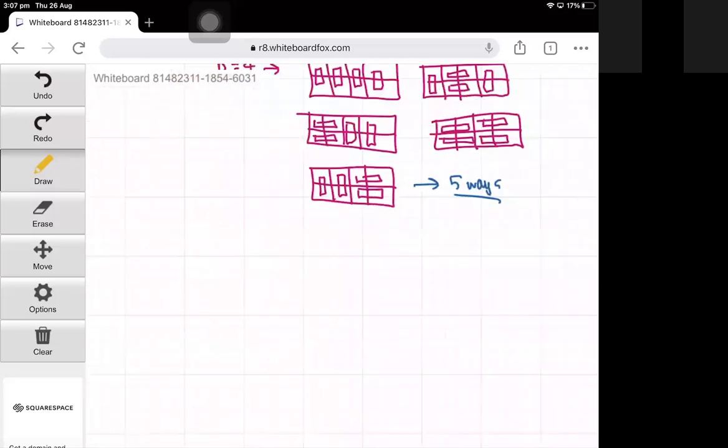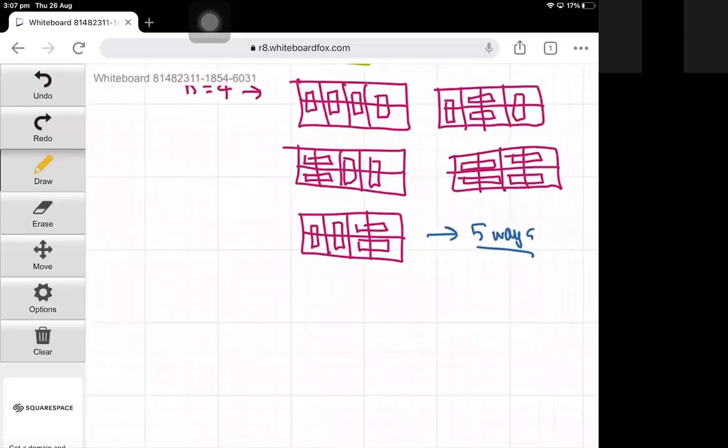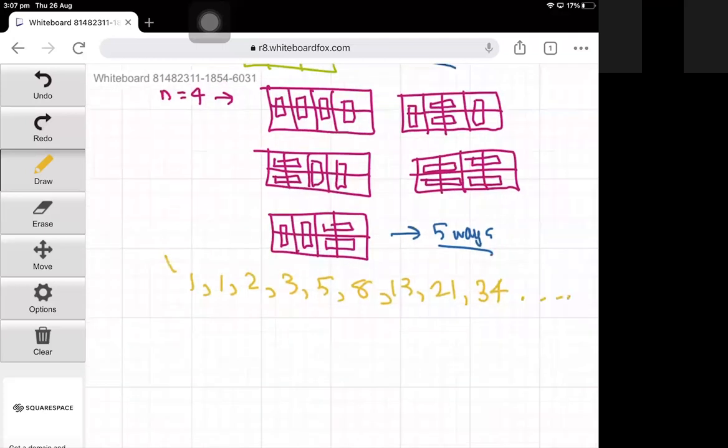And one very famous sequence that looks like this is the Fibonacci sequence. The Fibonacci sequence goes like this: 1, 1, 2, 3, 5, 8, 13, 21, 34, and so on.